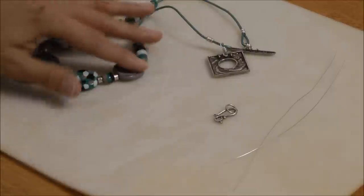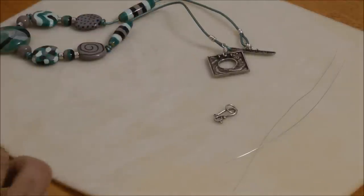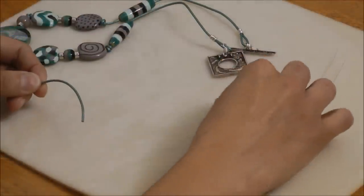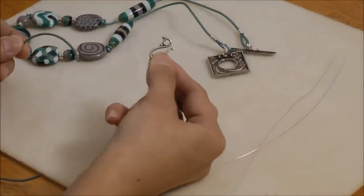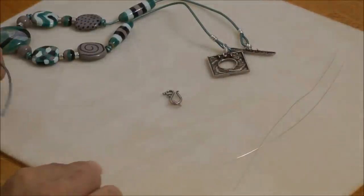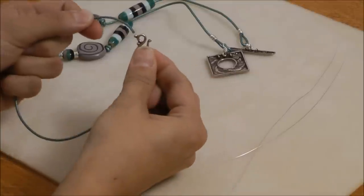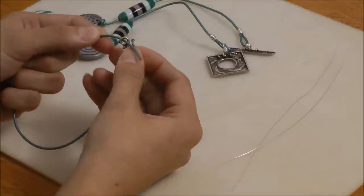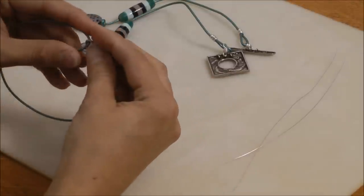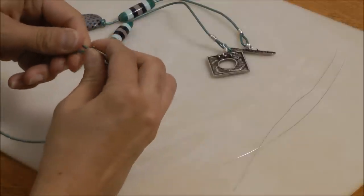However, what I would have liked to have done is to simply take the leather, take one half of the clasp that I wanted to use, in this case a simple hook and eye clasp, and I take the leather and string it onto the clasp and fold it back over itself like this.